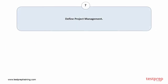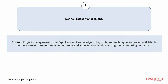Question number 7: Define project management. Your answer is: Project management is the application of knowledge, skills, tools, and techniques to project activities in order to meet or exceed stakeholder needs and expectations and balance their competing demands.